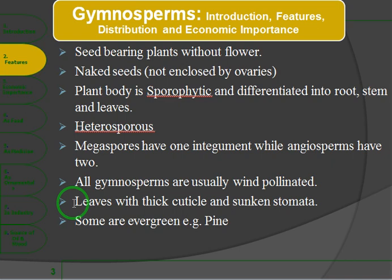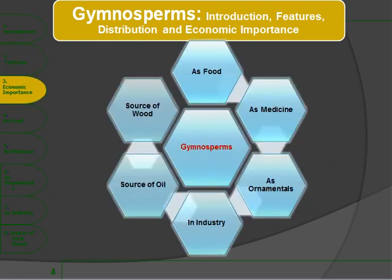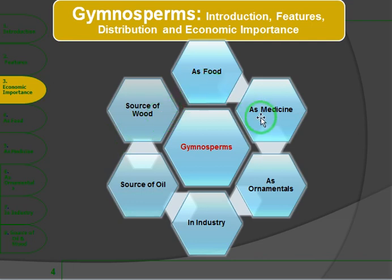Some gymnosperms are evergreen. For example, pines are evergreen. Moving on to economic importance, gymnosperms are used as food and as medicine, as discussed in the previous class.